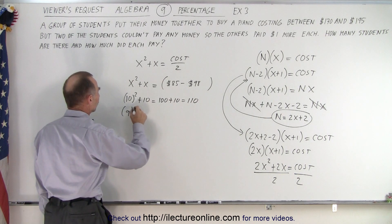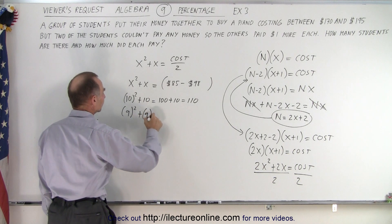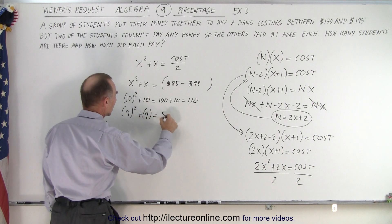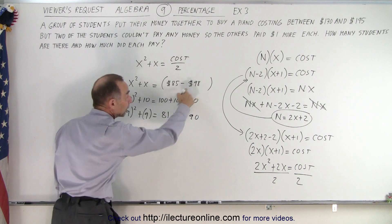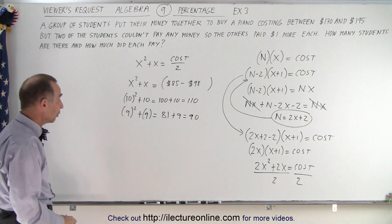How about 9? 9² + 9, that's 81 + 9 which is 90. So that does fall within that range. So 9 for x would be a good value.